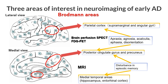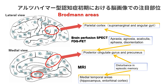Next are the posterior cingulate gyrus and precuneus. Disorders in this region cause episodic memory impairment and disorientation such as topographical disorder. Finally, there is the medial temporal lobe, especially the hippocampus and the entorhinal cortex located in the anterior part of the parahippocampal gyrus. Disorders in this region cause memory impairment.